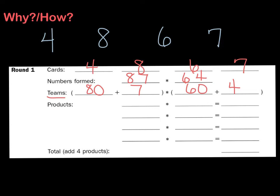Now, if they're on the same team, they cannot be multiplied with each other. That means 80 and 7 are on the same team, so I'm not going to multiply those two numbers together.